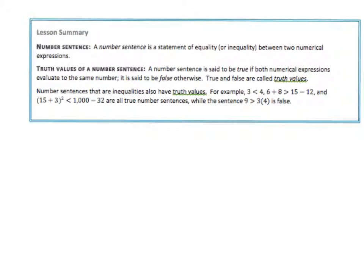So if you need more practice make sure that you come to class because I do have more practice ones, but for the video I'm hoping that is enough. I want you to notice that a number sentence is just a statement of equality or inequality between two numerical expressions, so we call them equations or inequalities. Truth values: a number sentence is true if both numerical expressions evaluate to the same number. If it's false then it means that they're not the same quantity, and so we have inequalities and we have equations.